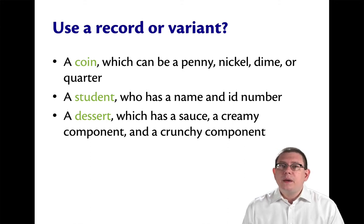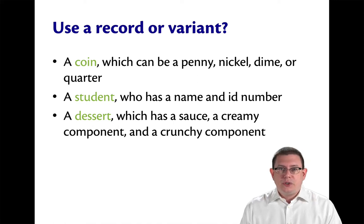Well, I would use a record. Because I know that when I model that student, I want to have two pieces of data for that student. And I could have a record with those two fields. A field for the student's name, and a field for the student's ID number.